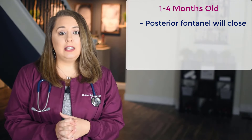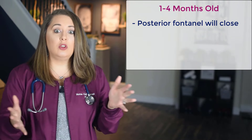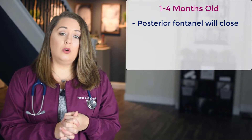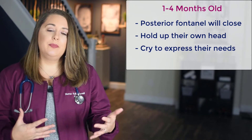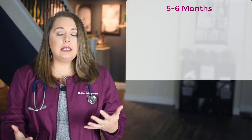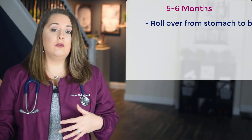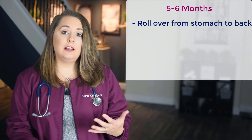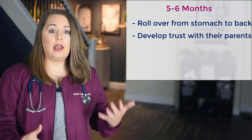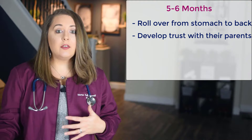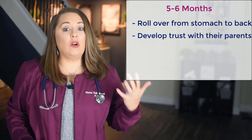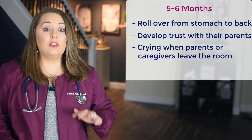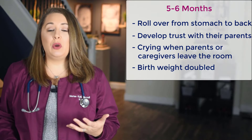The next age bracket is one to four months old. At this stage, the posterior fontanelle will close, the infant will start to hold their own head up, and they will learn how to cry to express what they need. At five to six months, infants will start being able to roll over from their stomach to their back. They continue developing trust with their parents, recognizing them as primary caregivers, and will start crying when parents or caregivers leave the room. The infant's birth weight at this point should be doubled.